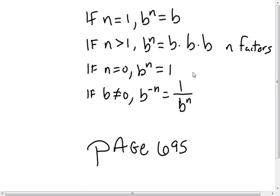As you're looking at the rules, remember the basics: anything to the one is that number, so if n equals one, b to the n equals b. If n is greater than one, then you multiply b times b for however many factors of n you have. If n equals zero, then b to the n equals one.